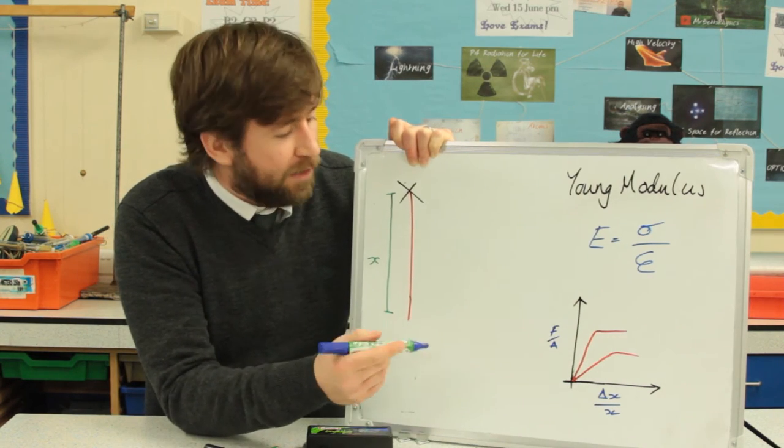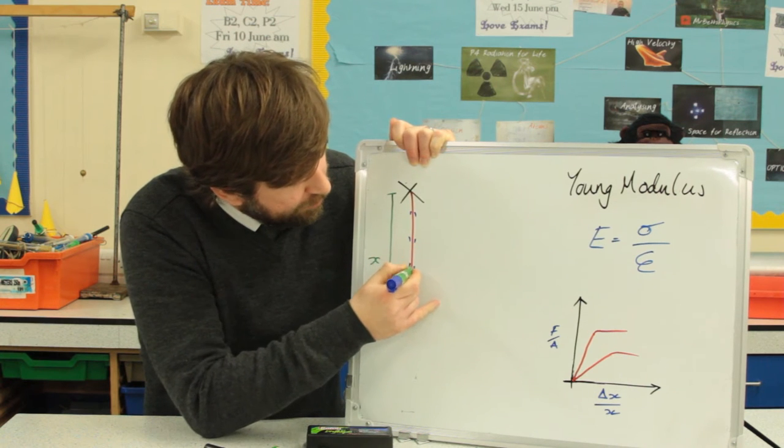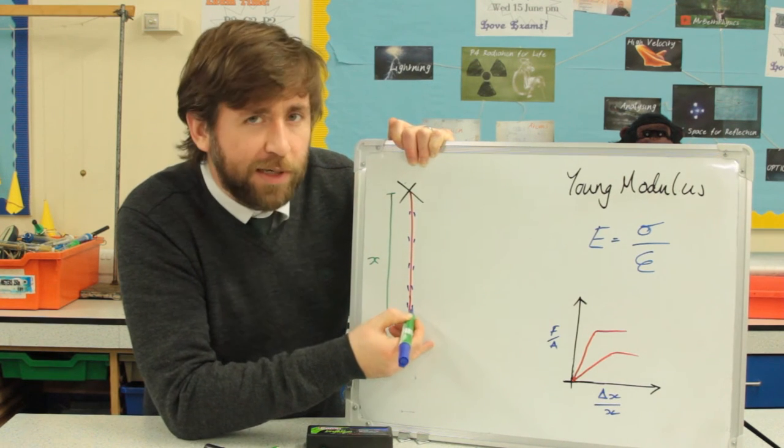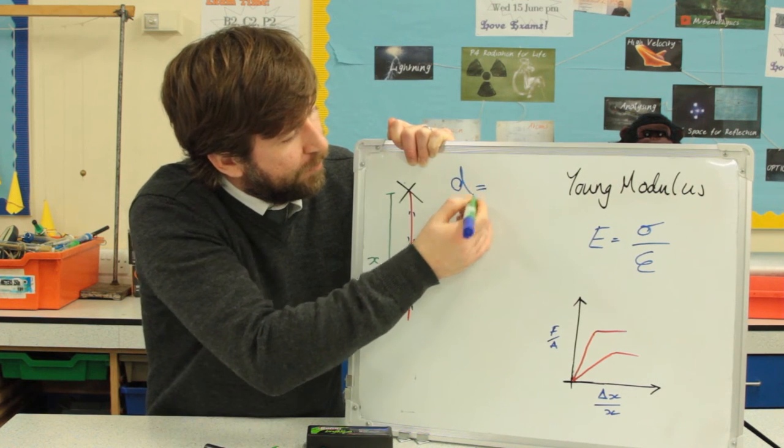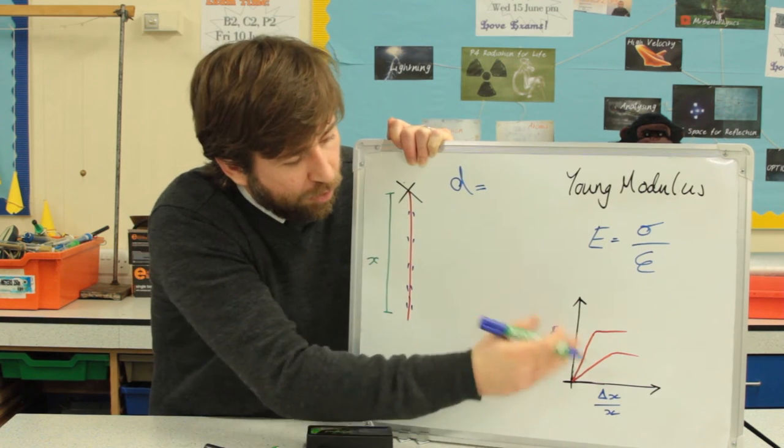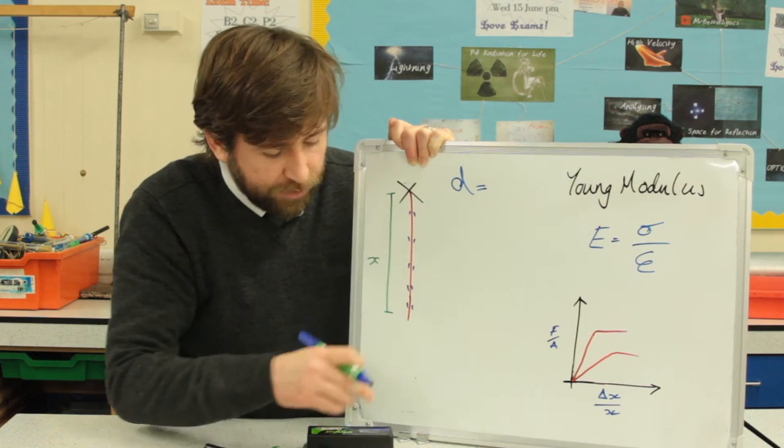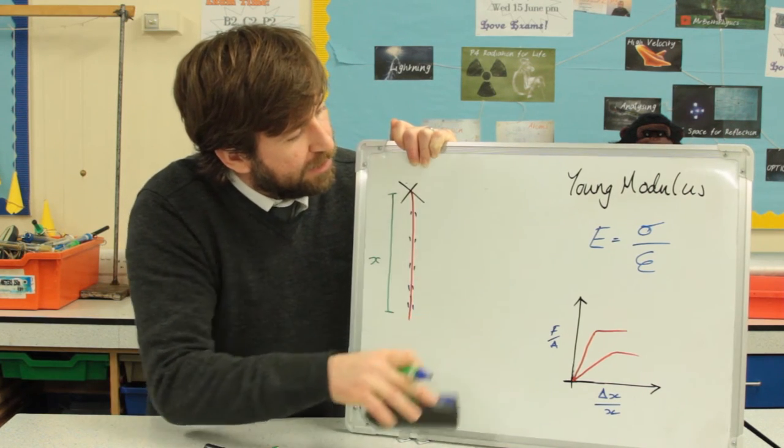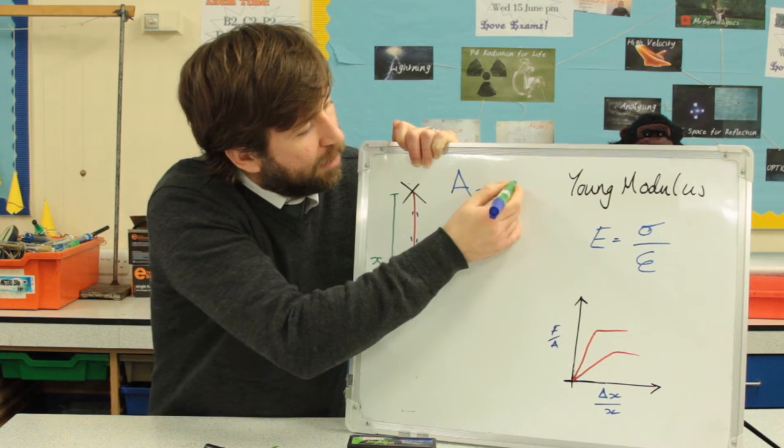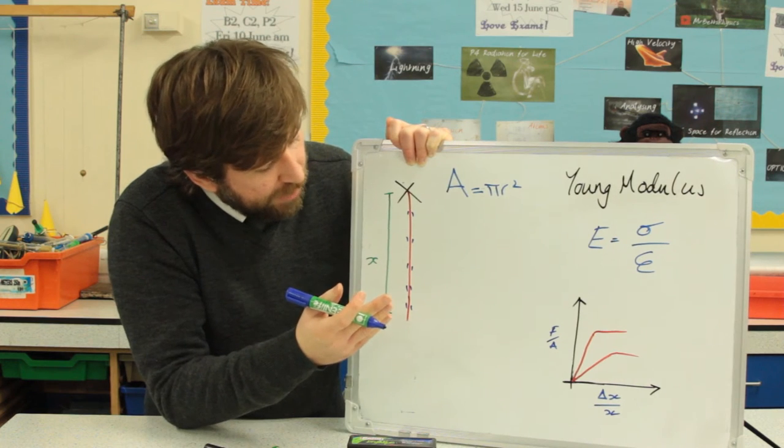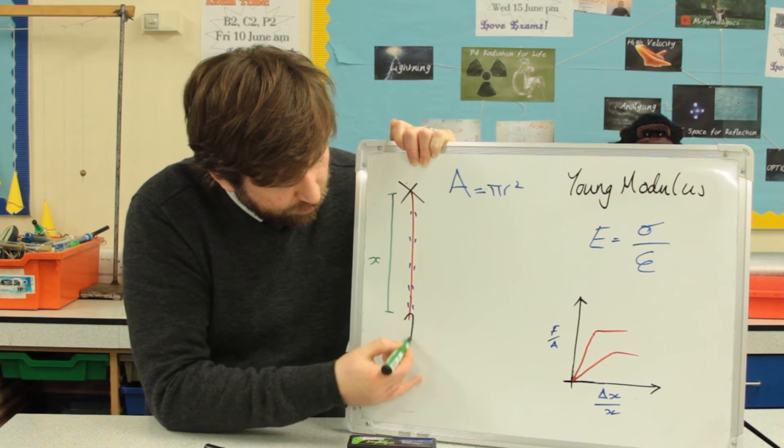Before adding any masses, you measure the diameter. You measure the diameter normally at about five places and take yourself an average, whatever that would be. Now, diameter's not in our equation there, but we're using diameter to calculate A, our cross-sectional area. So we're actually interested in our area, which is πr². Once you've got your average cross-sectional area, you can start loading your strawberry lace.